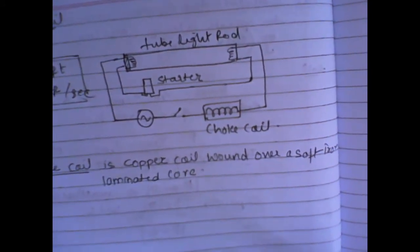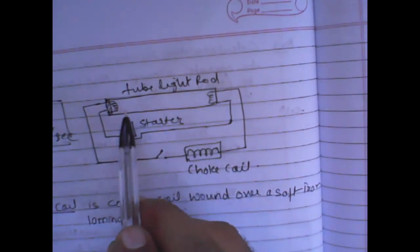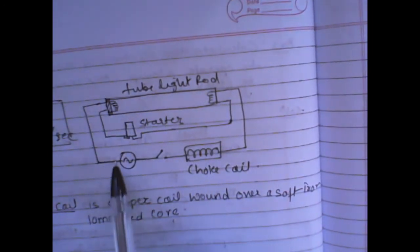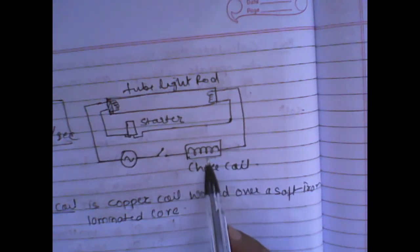This coil is put in series with a circuit in which current is to be reduced. If you see, this is our tube light, this is the tube light rod. Here is the AC circuit, AC source and this is the choke coil. We are connecting in series where the current is to be reduced.